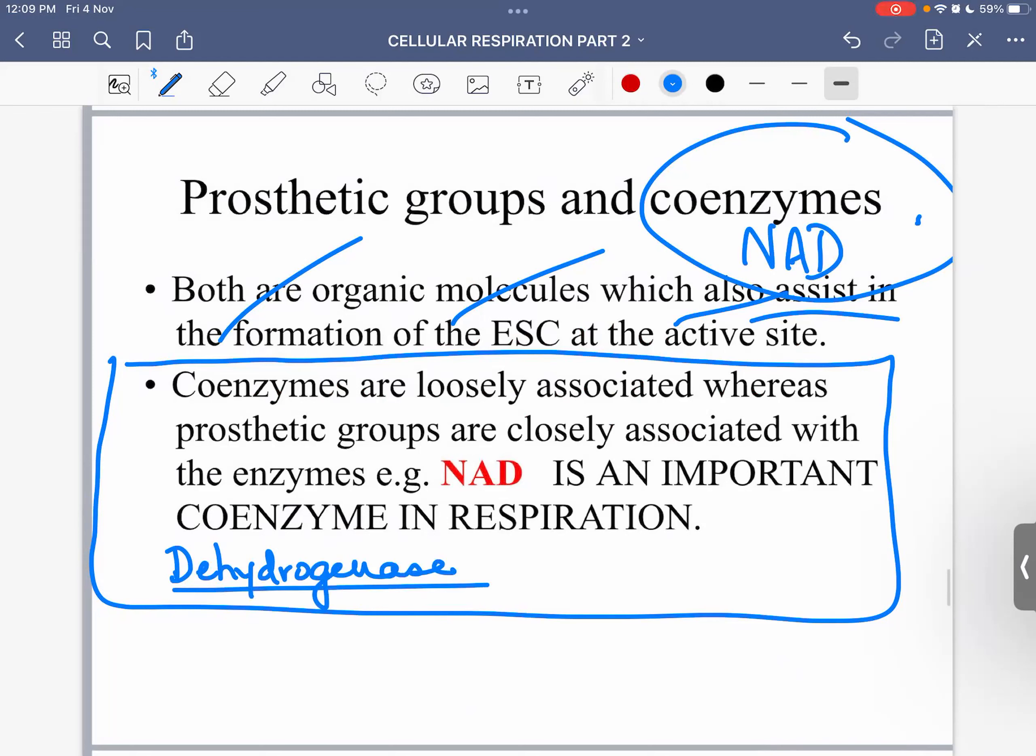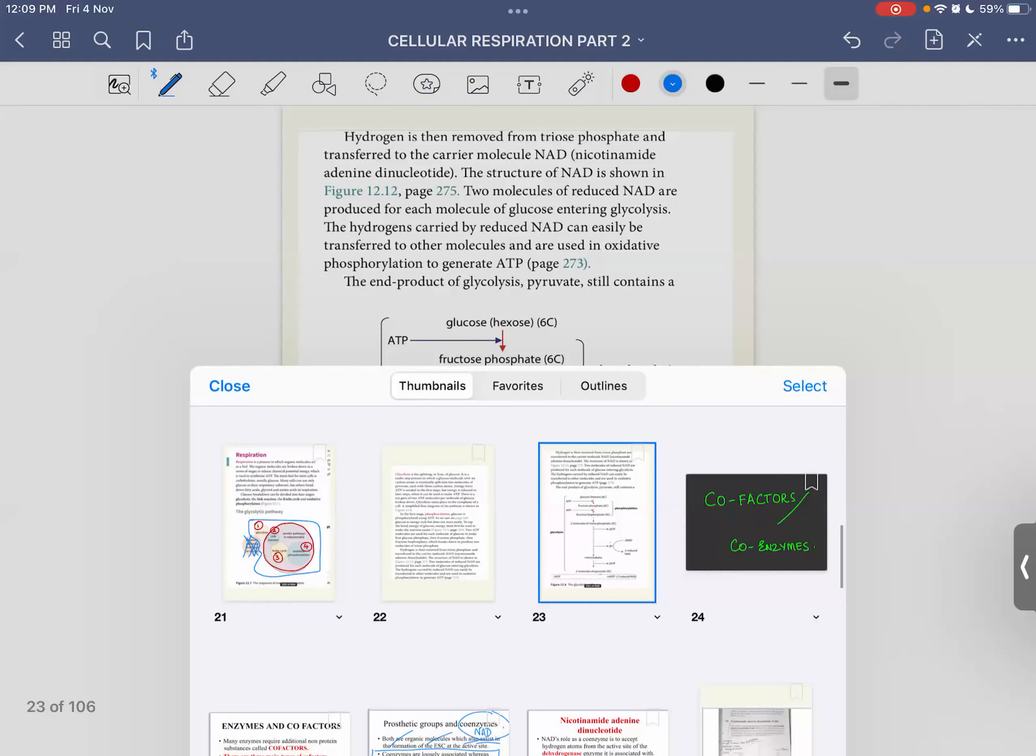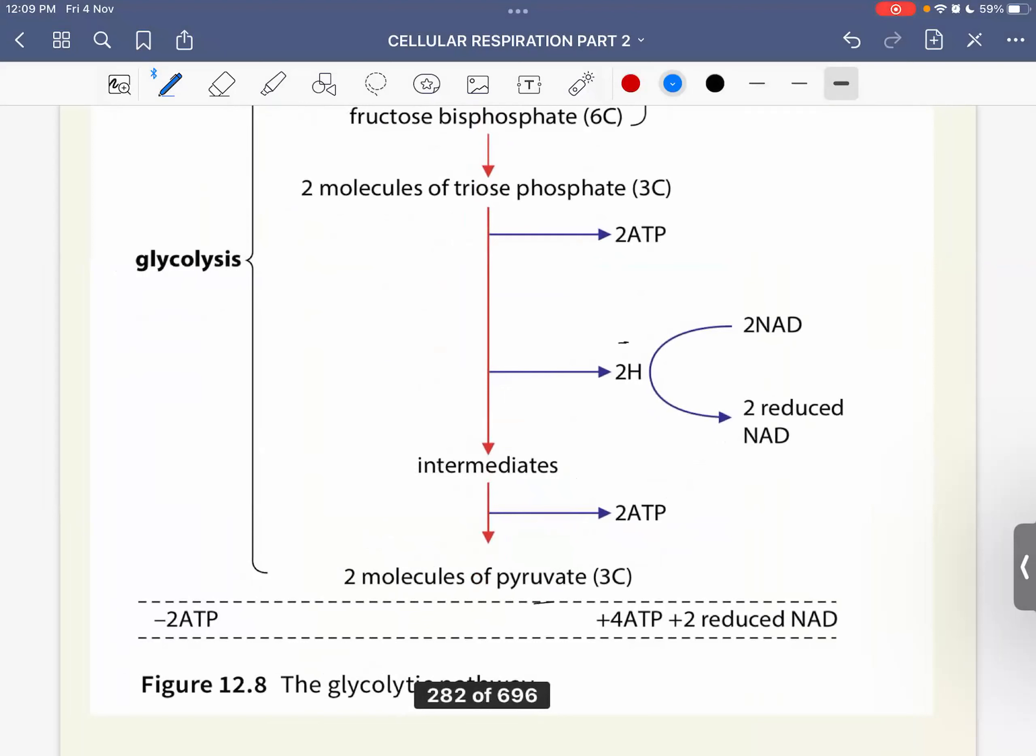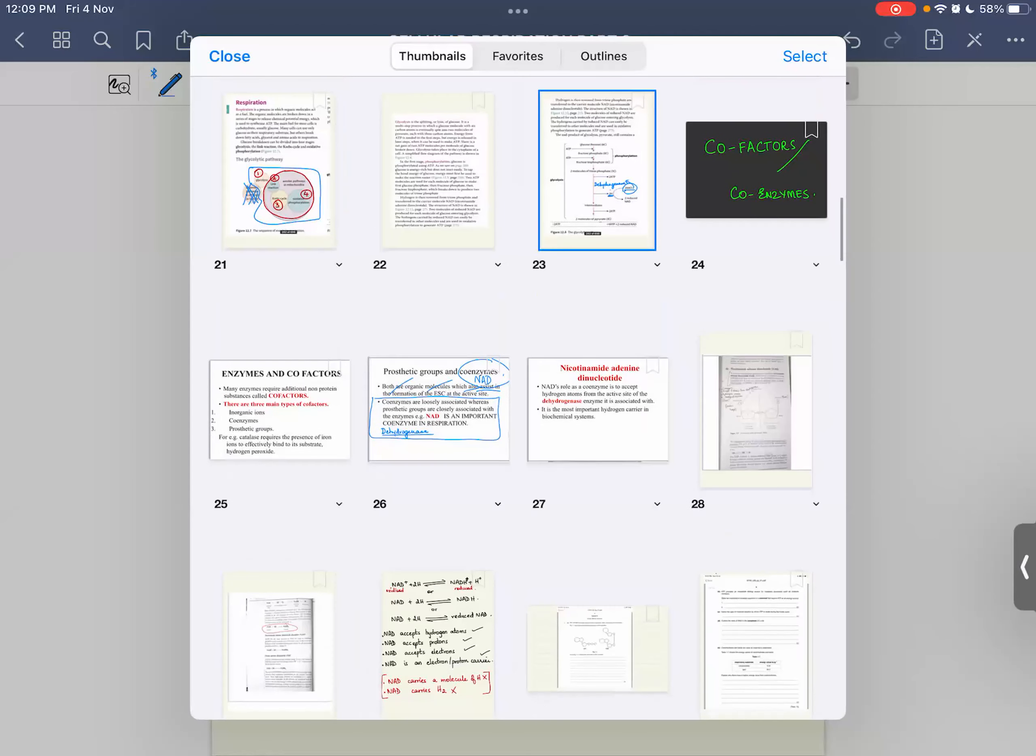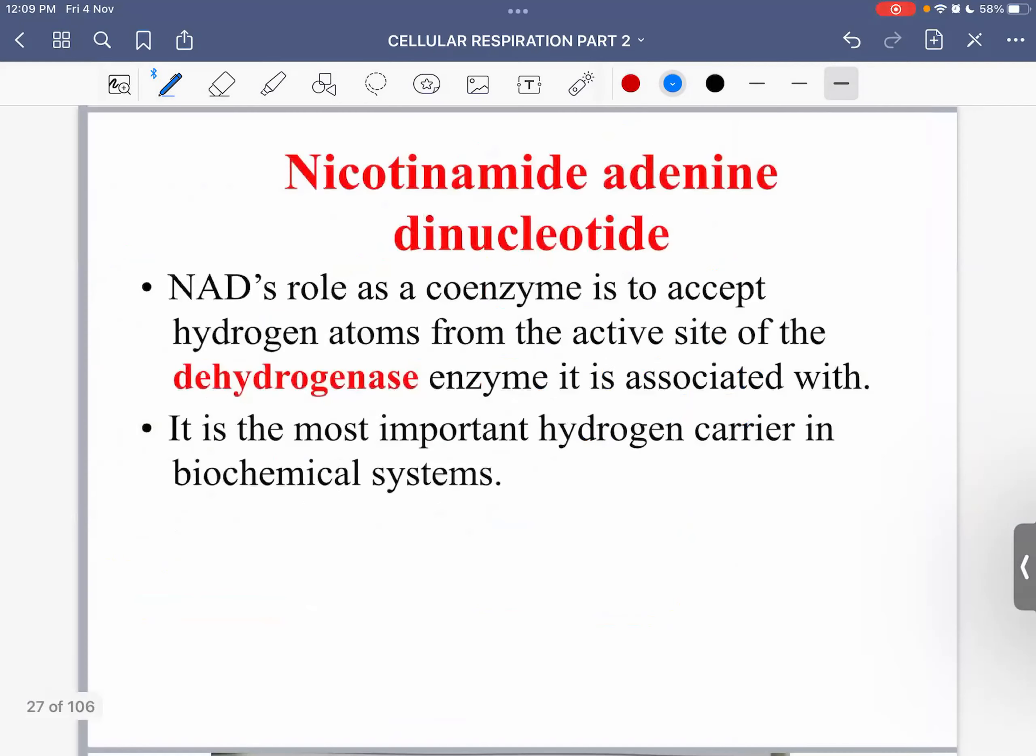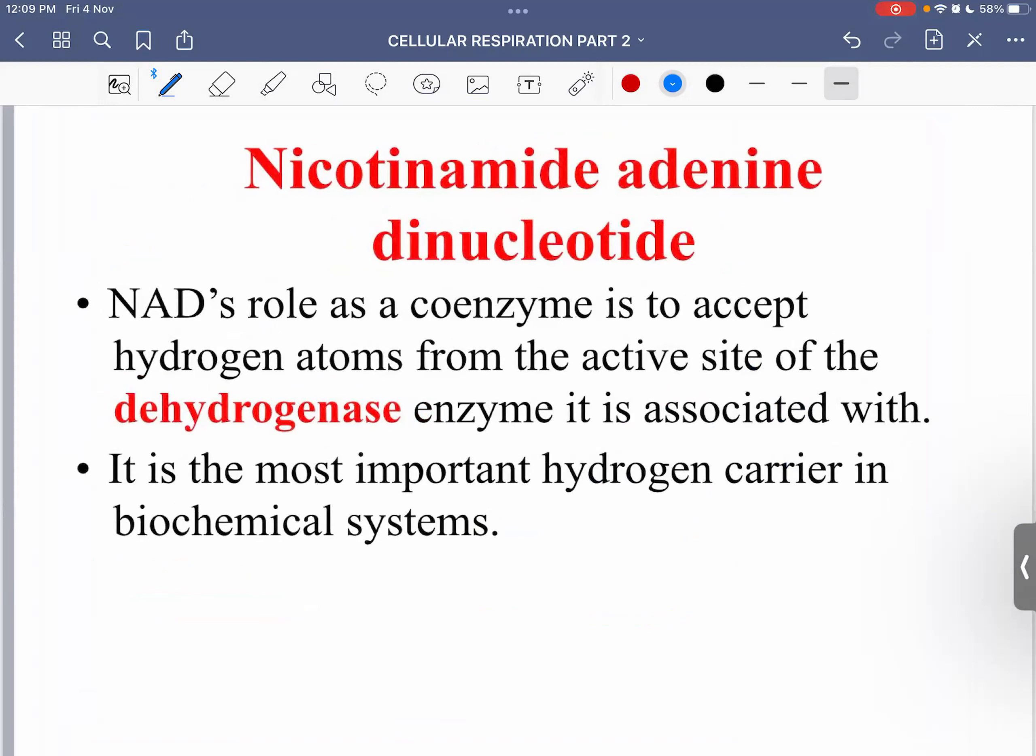As far as cellular respiration is concerned, the name of the enzyme is dehydrogenase. You know why dehydrogenase? When we were doing glycolysis we saw that two hydrogen atoms are removed. It means I mentioned here but it can't be removed without dehydrogenase. And the helper of dehydrogenase is NAD, because the dehydrogen is removed by NAD. That is why we say that NAD is a coenzyme. NAD's role as a coenzyme is to accept the hydrogen atoms from the active site of dehydrogenase enzyme. It is the most important hydrogen carrier in biochemical systems. If there was no NAD there would have been no cellular respiration.